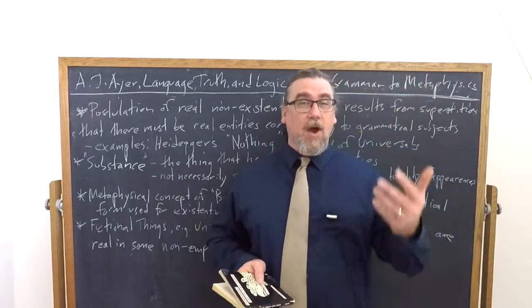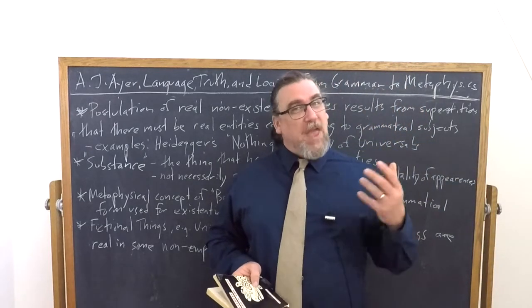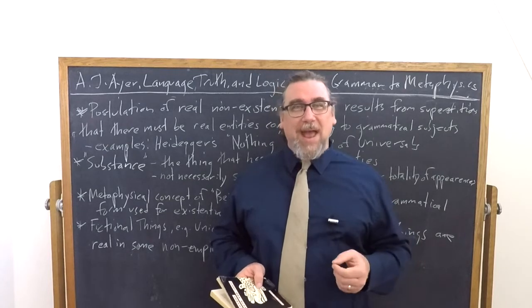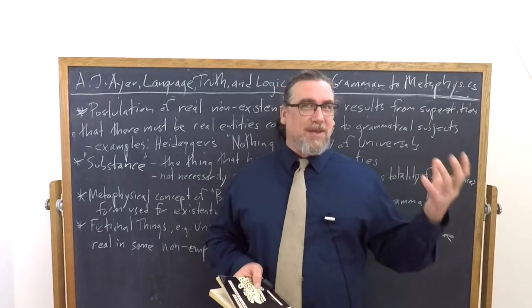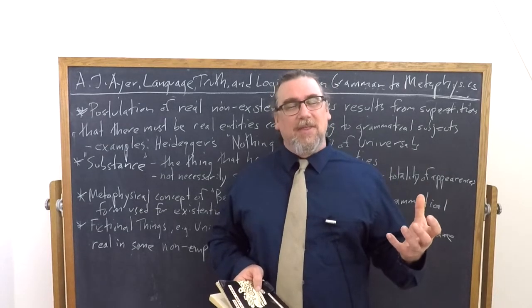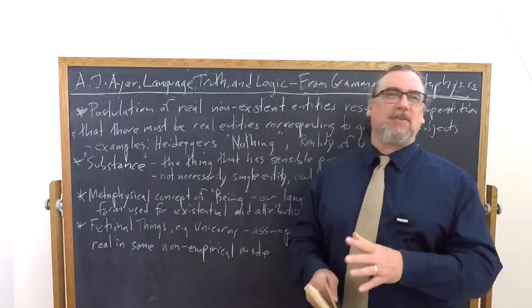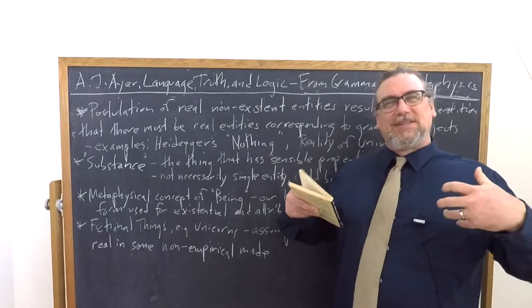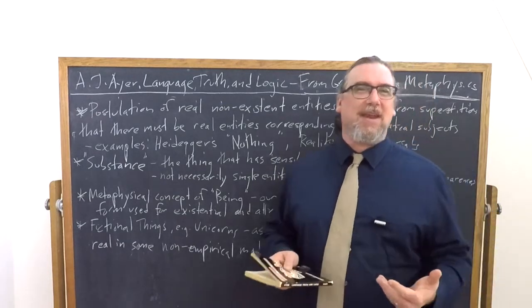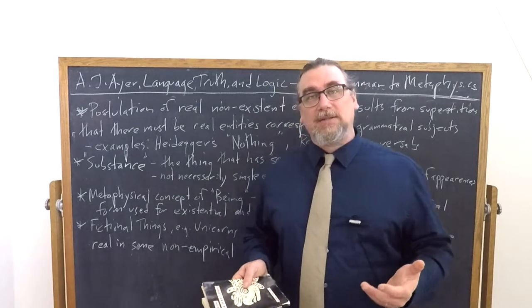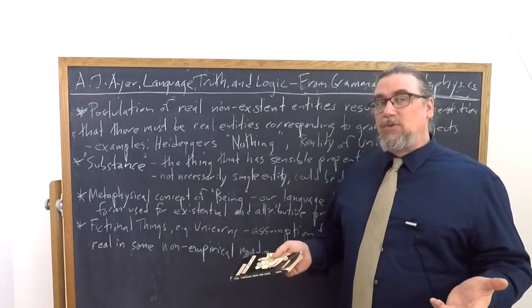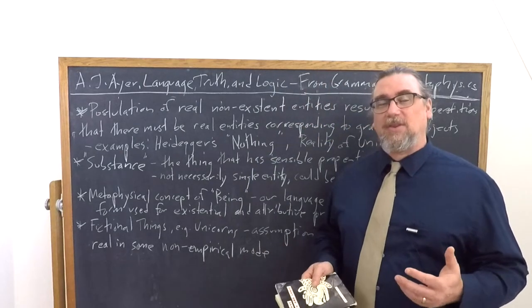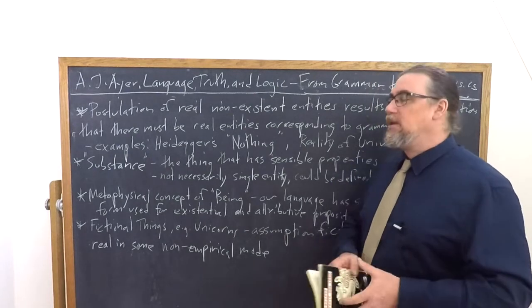So you might think about Descartes famous piece of wax example, where he looks at the thing in terms of its qualities and then he brings the wax close to the fire. He says all of its qualities are changing. What underlies it? Well, it's the substance itself of the wax, which is an extended thing. Ayer is saying, we don't have to assume that our language leads us to think about that, but we don't have to buy into that.